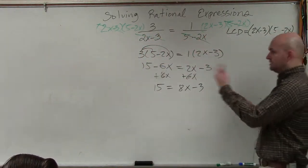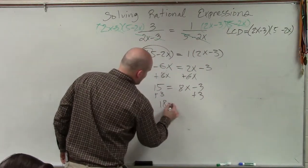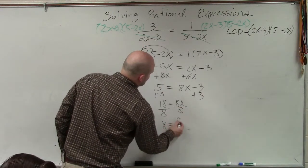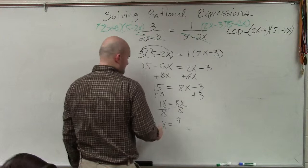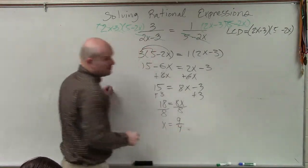Then I get everything else on the other side. So I add 3 to both sides. 18 equals 8x. Divide by 8 on both sides. x equals 9 fourths when you reduce it.